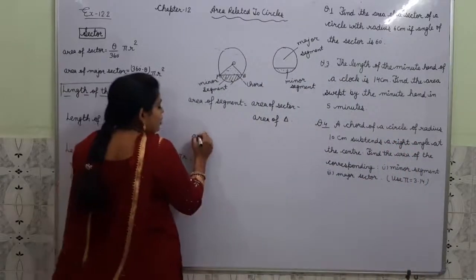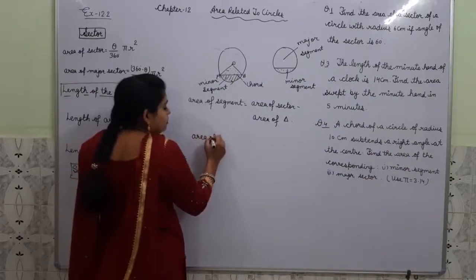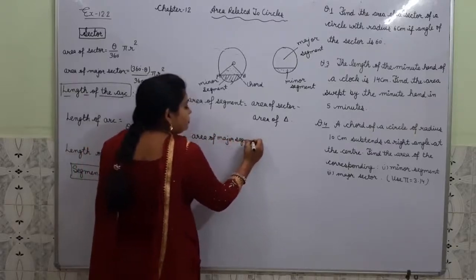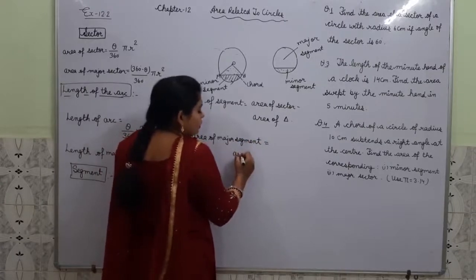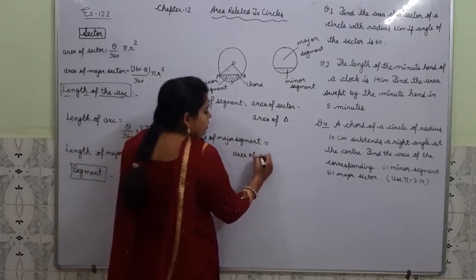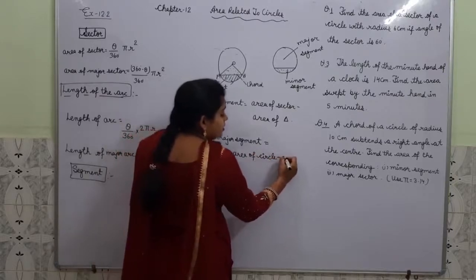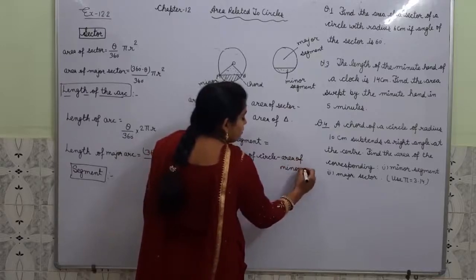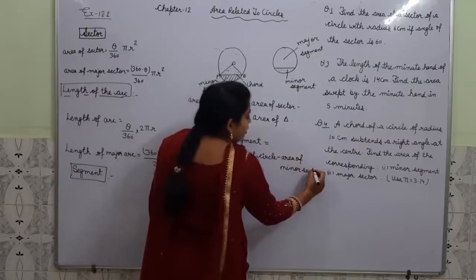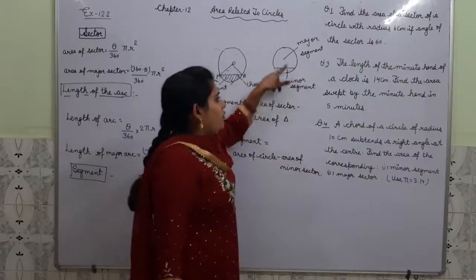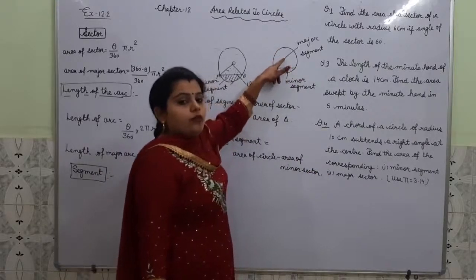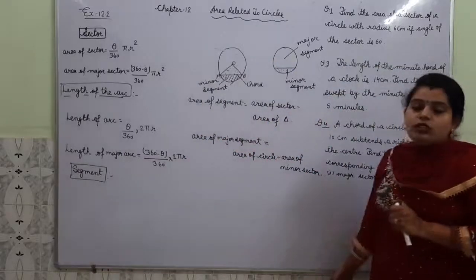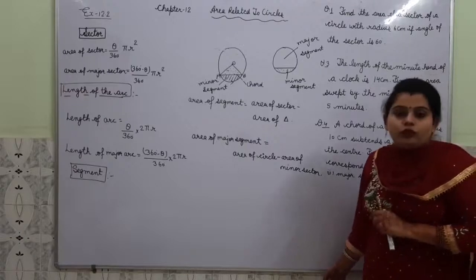If we want to find the area of major segment, area of major segment equals area of circle minus area of minor segment. If we subtract the minor segment area from the area of the circle, we get the area of the major segment. These are all the formulas we will use in our exercise.